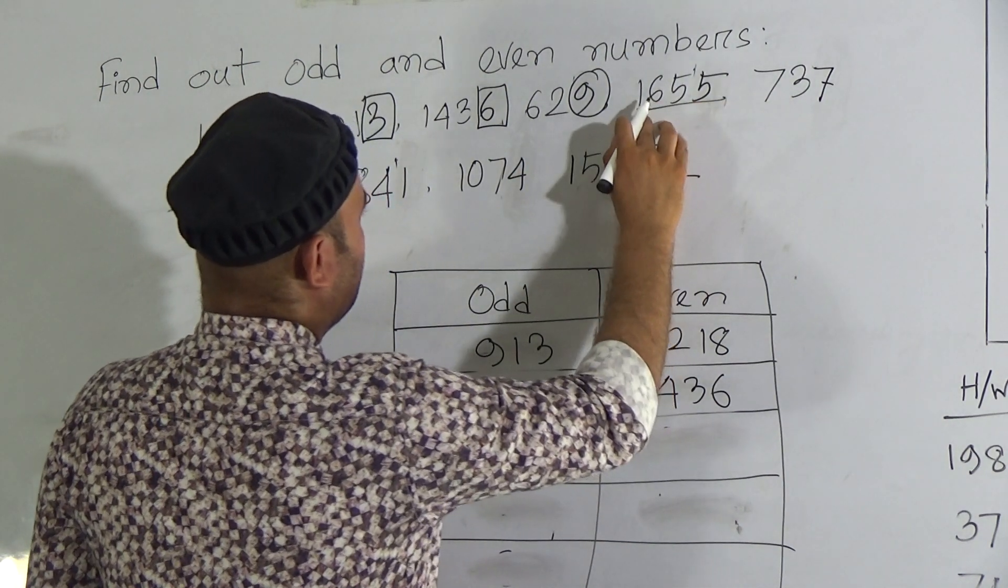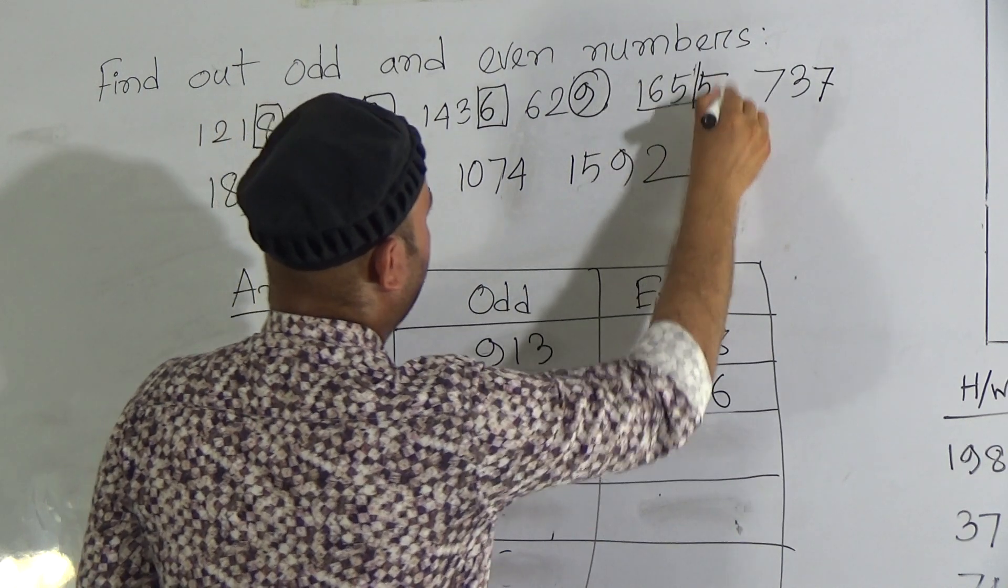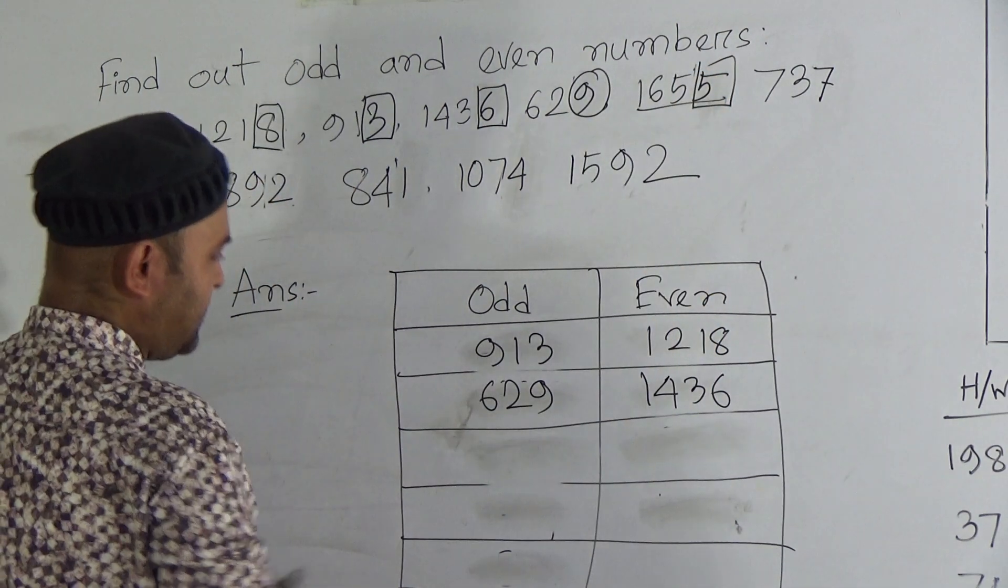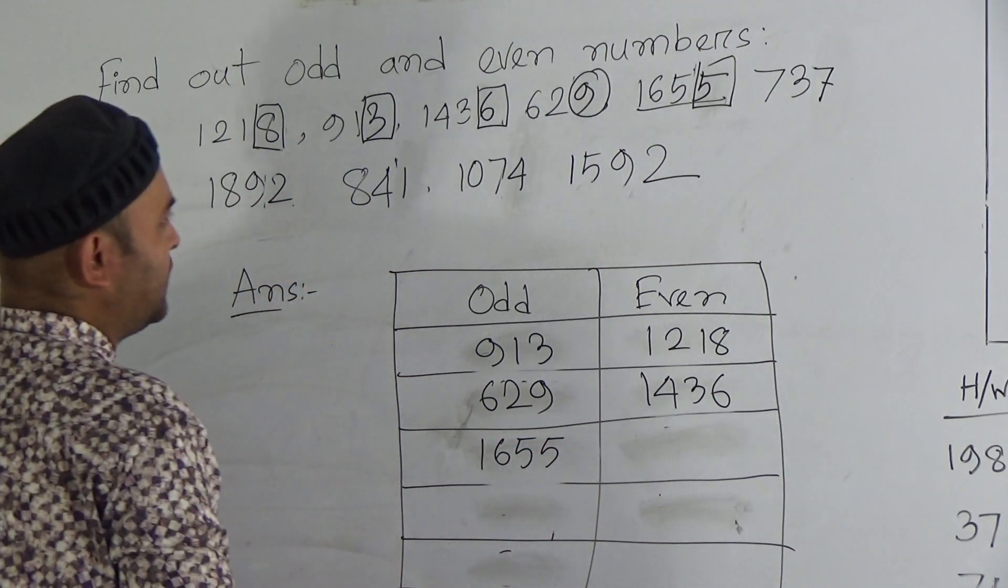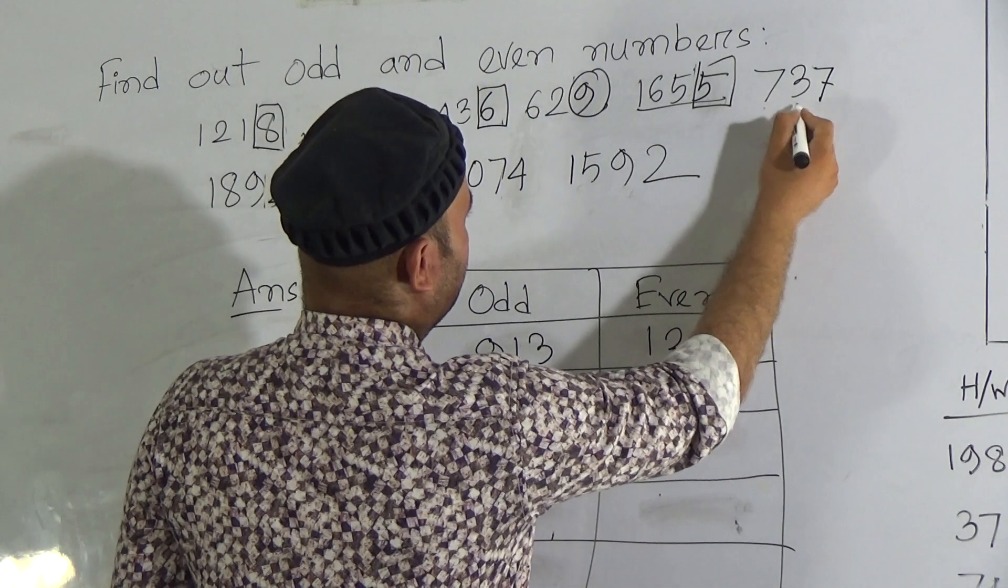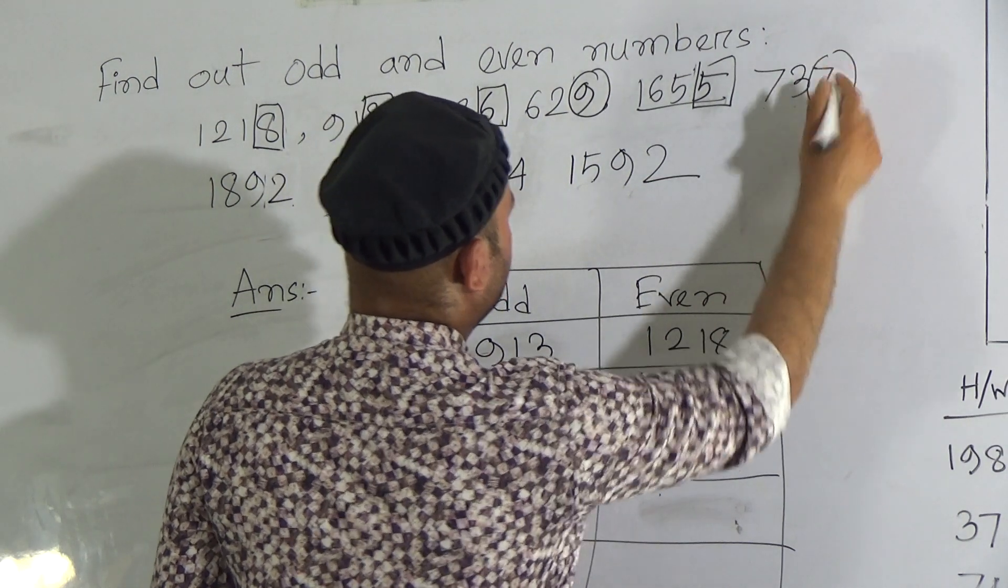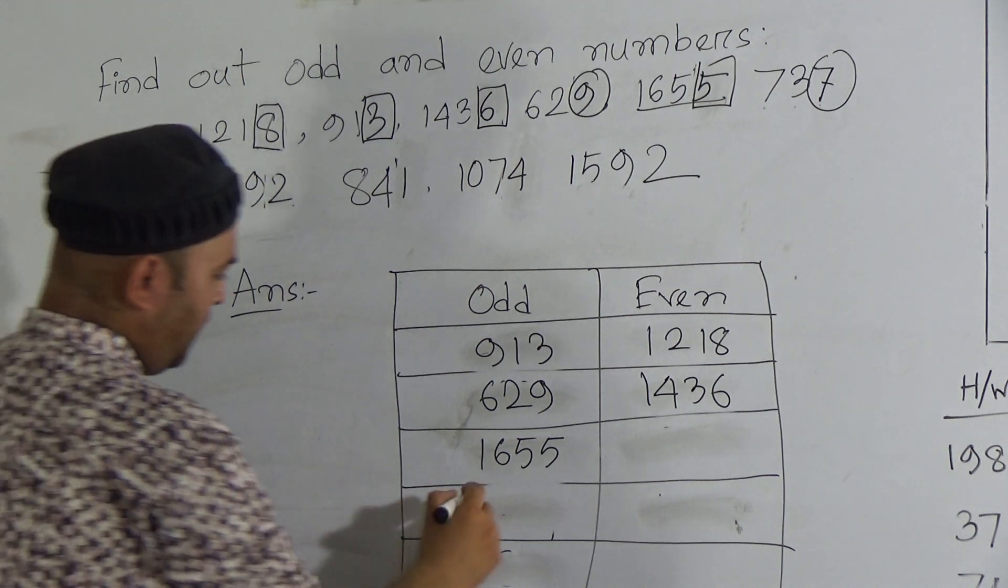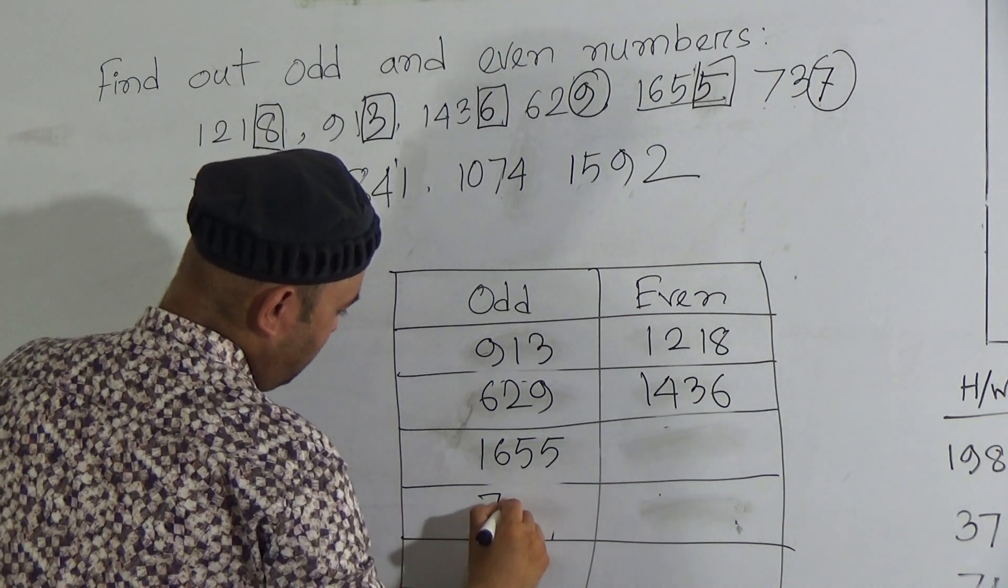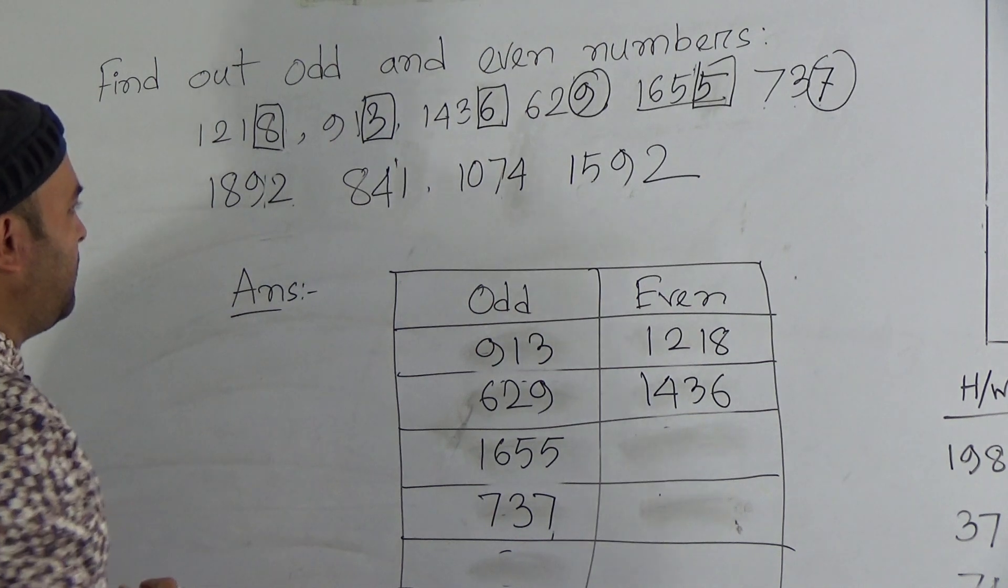Now, the next one, 1655. 5 is here, ones place digit. That's why 1655 is an odd number. Now, the next one, 737. 7 is here, ones place digit. And we know that 7 is an odd number. That's why 737 is an odd number.